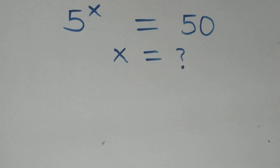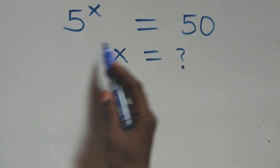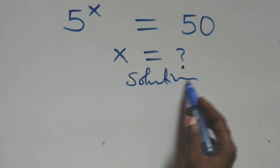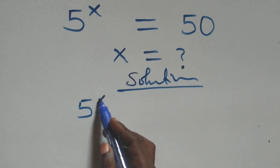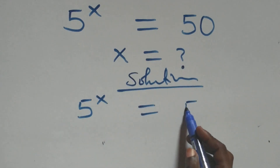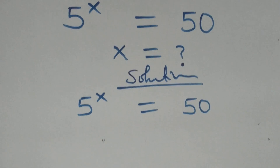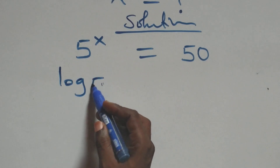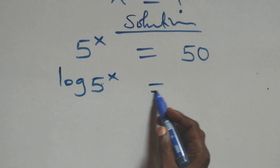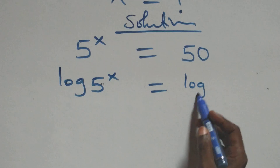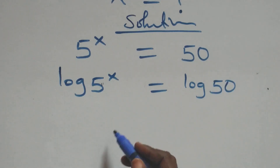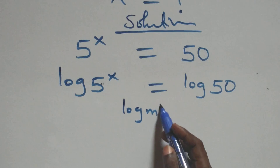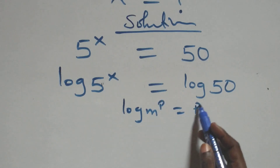Hello, you are welcome. Here we solve this exponential equation: 5 raised to the power x equals 50. We take the log on both sides, giving log(5^x) = log(50). We then apply the power rule of logarithms, where log(m^p) equals p·log(m).